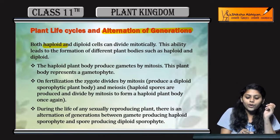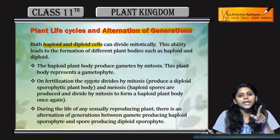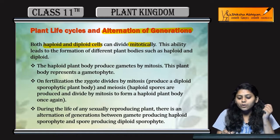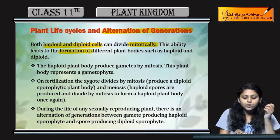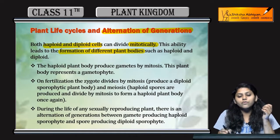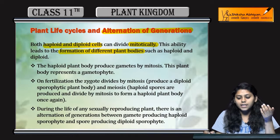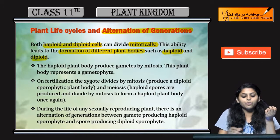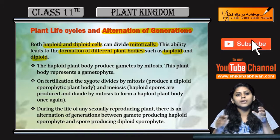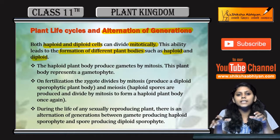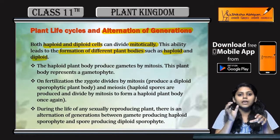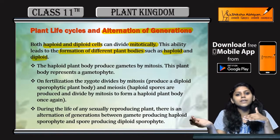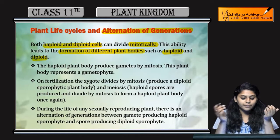Both haploid और diploid cells होते हैं, they can divide mitotically — equational division show करते हैं। This ability leads to the formation of different plant bodies, such as haploid और diploid। अगर haploid cells mitotically divide करेंगे, then haploid form करेंगे, और अगर diploid cells mitotically divide करेंगे, then diploid form करेंगे।